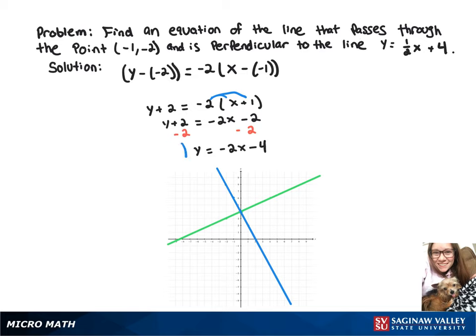So that'll be our blue line on the graph, and it's perpendicular to y equals 1 half x plus 4, which is our green line on the graph.